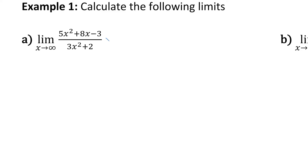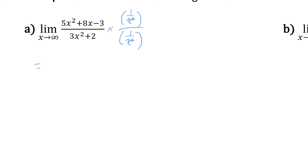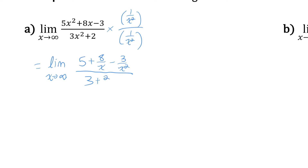Another way of saying that: we could multiply the numerator by 1 over x squared and the denominator by 1 over x squared. As long as we multiply the top and bottom by the same thing, we're really just multiplying the function by 1, so it'll be equivalent. This gives us the limit as x approaches infinity of 5 plus 8 over x minus 3 over x squared, all over 3 plus 2 over x squared.